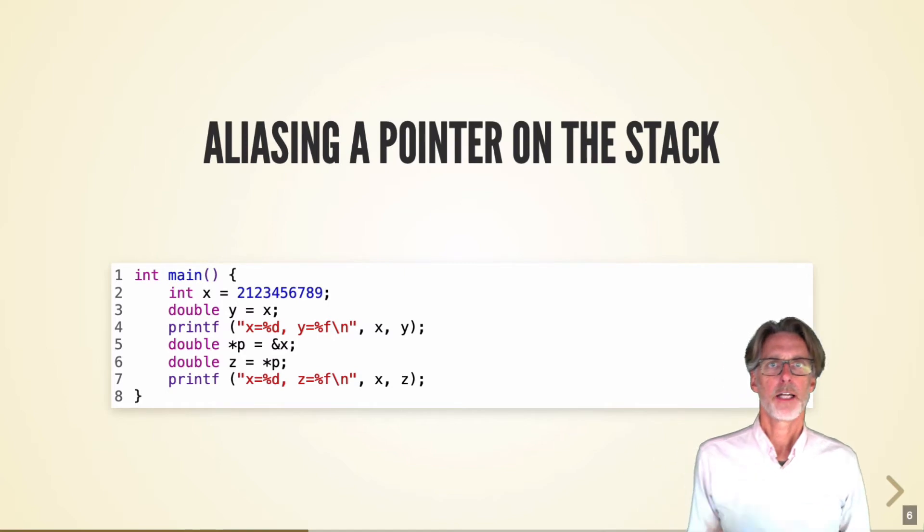I can also violate safety in C by aliasing a pointer on the stack. So here, I have a stack allocated variable X and an alias Y. Note that when I create this kind of alias, it's not an alias at all. This is a copy. So the value of X is copied into Y. And in this case, C will do a conversion because C knows that integers and doubles have different representations in the memory.